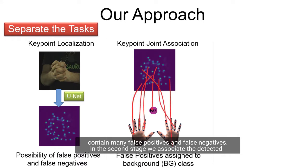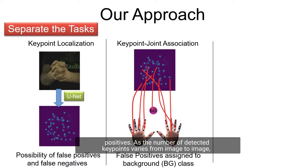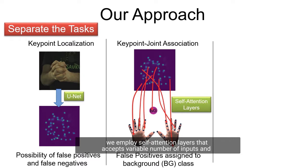In the second stage, we associate the detected keypoints with corresponding joint locations or to a background class in case of false positives. As the number of detected keypoints varies from image to image, we employ self-attention layers that accept variable number of inputs and also build a global context of the features that is necessary to classify the keypoints.